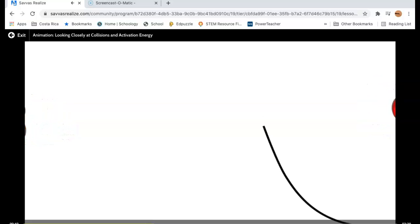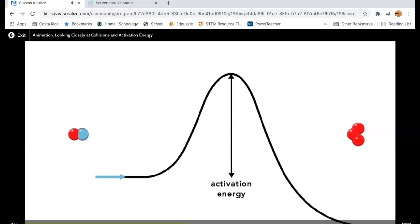In addition to having the correct orientation, the colliding particles must have enough energy to break the bonds in the reactant molecules as the new bonds form. The minimum collision energy required for such a process is known as the activation energy for the reaction. If the collision energy is less than the activation energy needed, no reaction occurs.